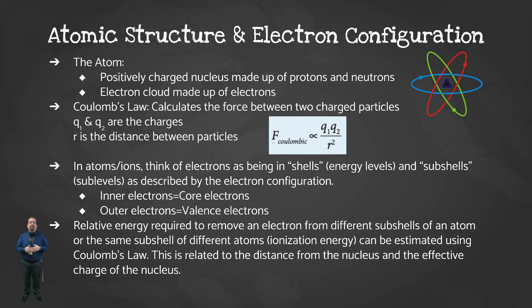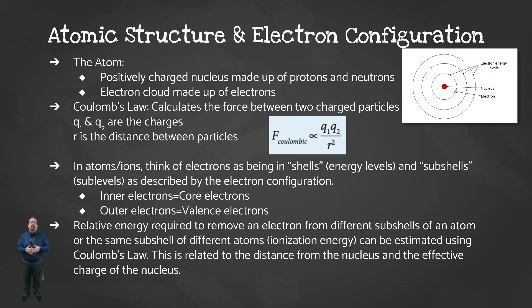We'll see this concept in action a little bit later when we start talking about periodic trends. You can think of the electrons in atoms or ions as being in particular energy levels, or shells, and sublevels, or subshells. These shells and subshells are described by the electron configuration.